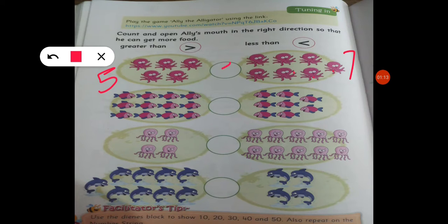So Ali's face will point towards seven. We will use this sign. So his face will open towards seven.